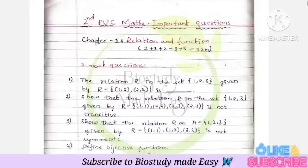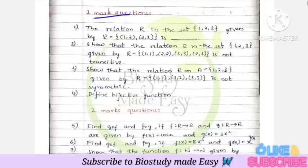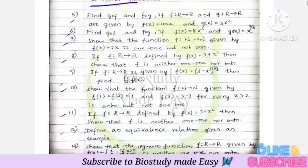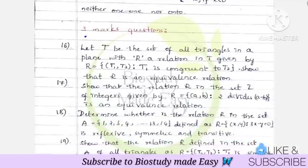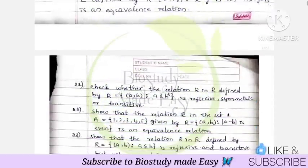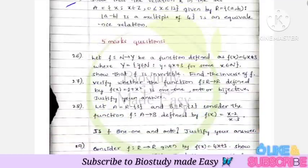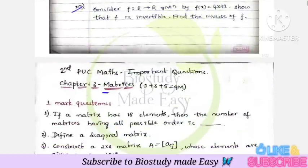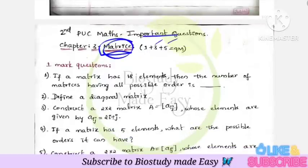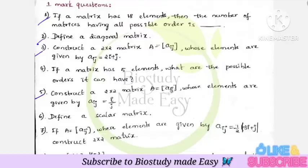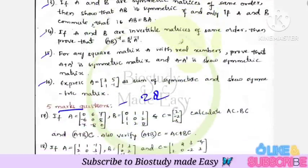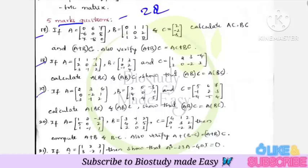First two important chapters: Relations and Functions. One mark questions, two mark questions — all covered. These are all three mark questions. Next, five mark questions — very very important — here are the questions in Relations and Functions. Next, Matrix is an important chapter: each chapter has all questions covered — one mark questions.